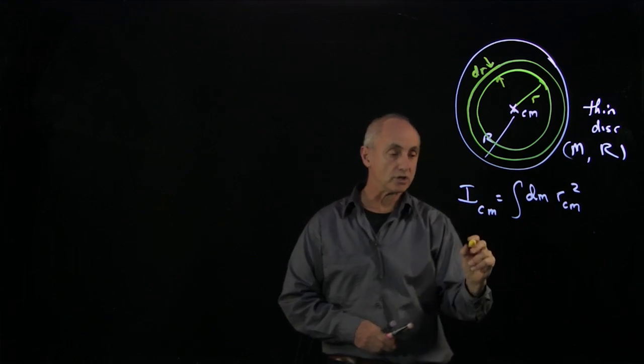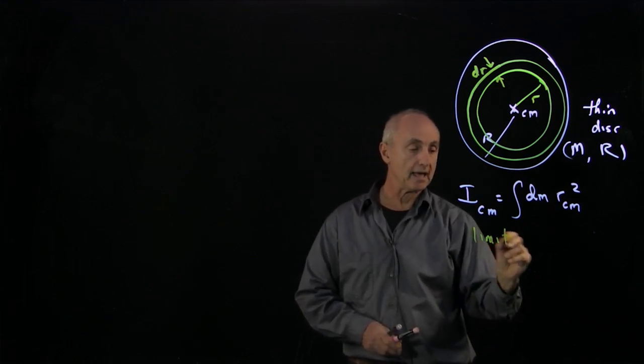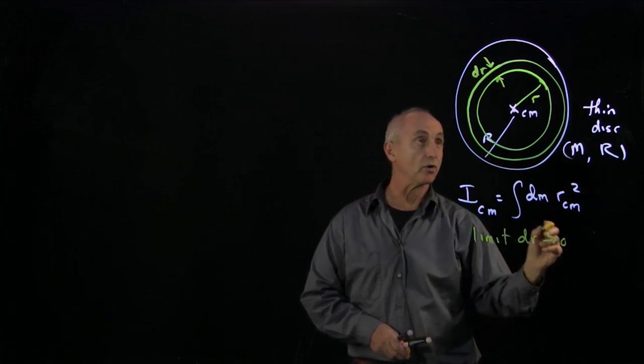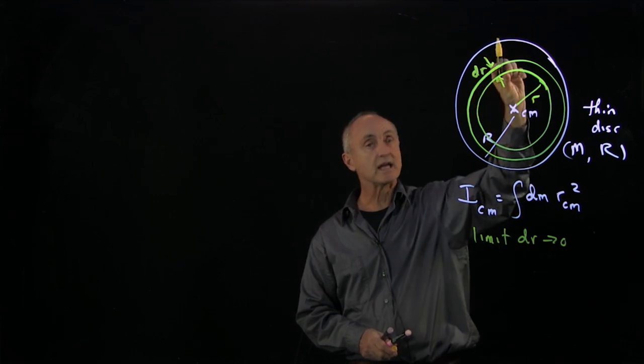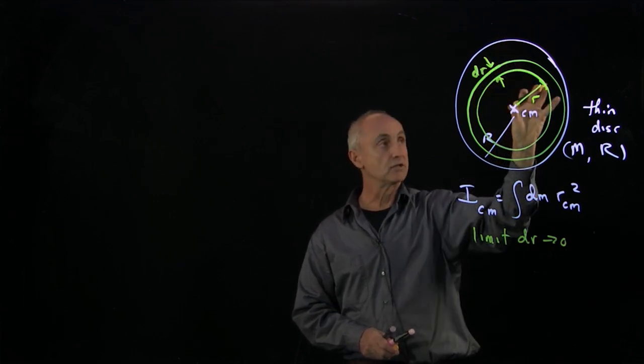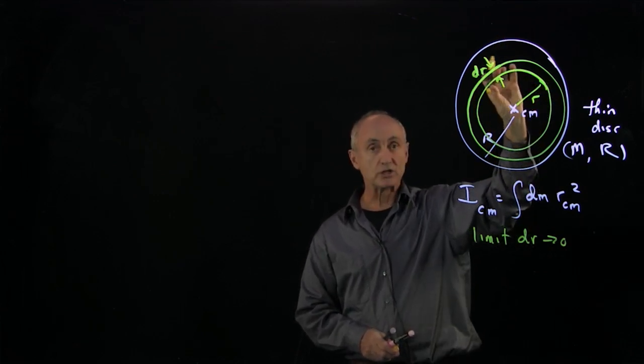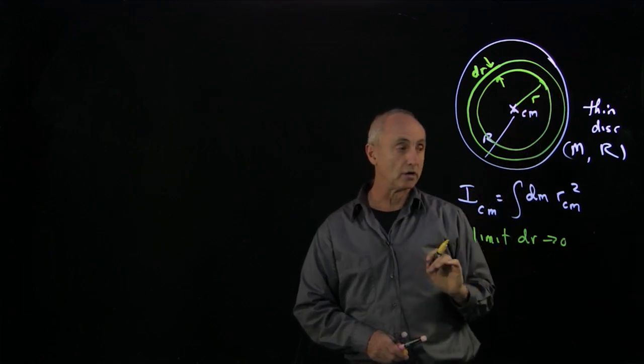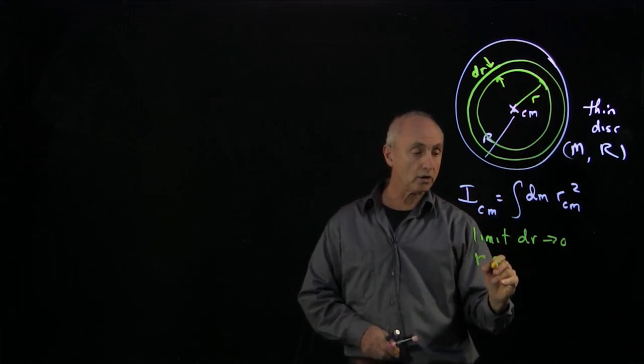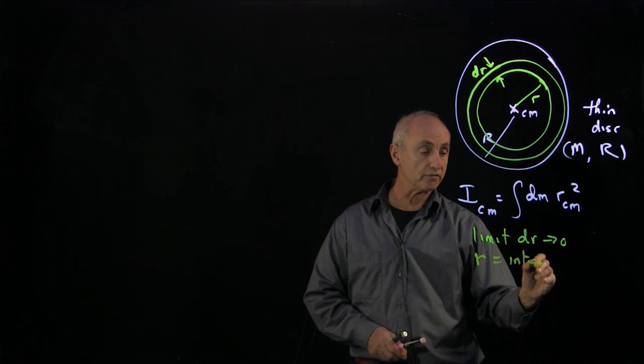Now in this calculation, we're going to take a limit as dr goes to 0. So even though the ring has some finite thickness, we'll eventually treat all of the mass element at a distance r from the center.